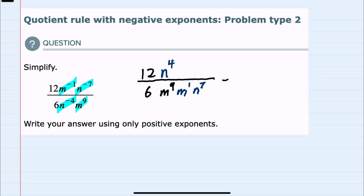From here I can continue to simplify. First, looking at those coefficients — we have just the numbers 12 and 6. So 12 over 6 simplifies to a 2, and that 2 would be in the numerator. My simplification here was just that 6 goes into 6 once and 6 goes into 12 twice.